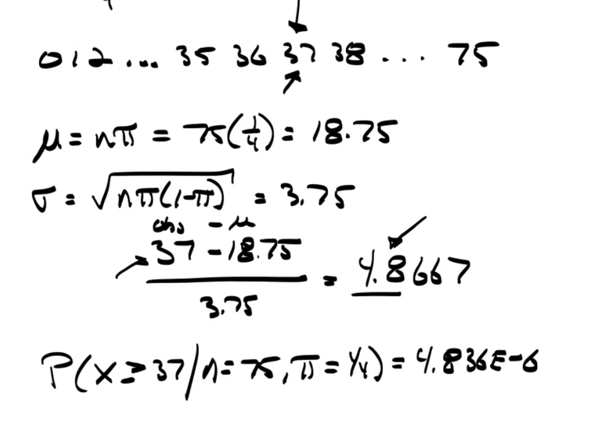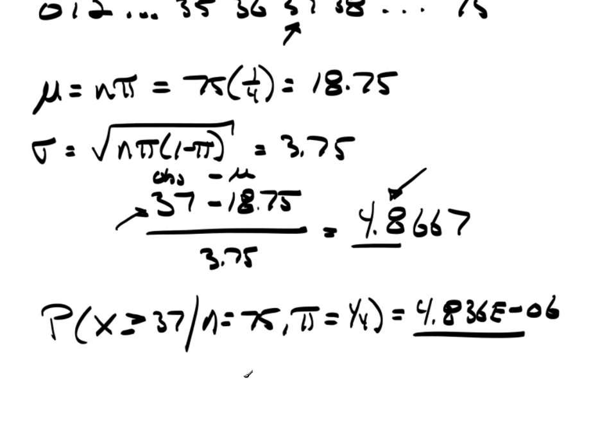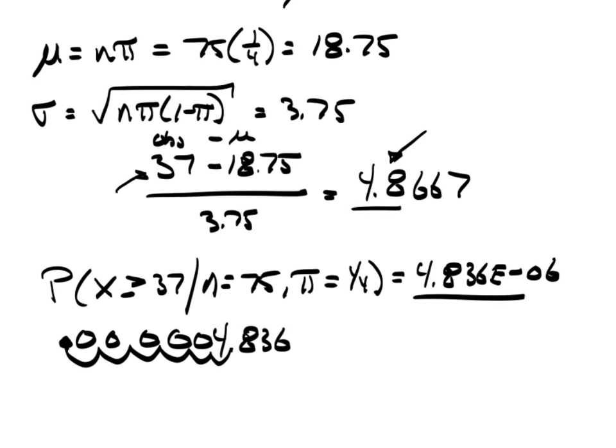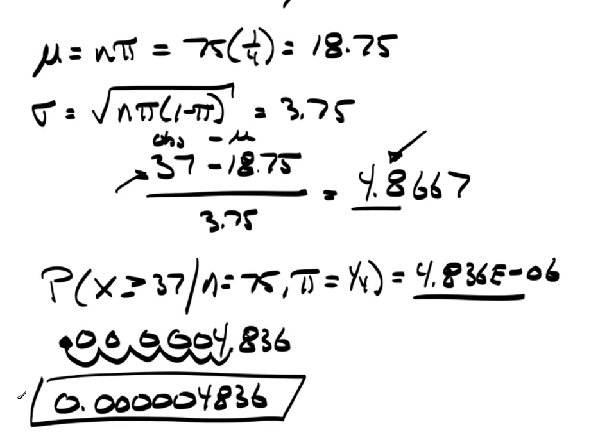This is scientific notation. This is saying that move the decimal point six places negative to the left. So 4.836, 1, 2, 3, 4, 5, 6. That's where the decimal goes. And zeros go here. So this probability is more like 0.000004836. This would be the probability that it simply happened by chance.